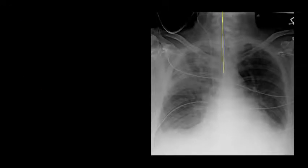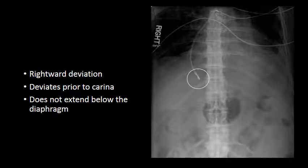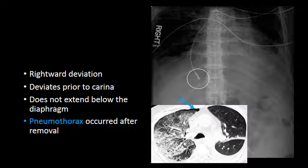Here's another example of a catheter which takes an abnormal course deviating to the right prior to the carina. On the abdominal film taken at the same time, we see this catheter does not pass below the diaphragm but instead goes into the right lower lobe, extending to the periphery. A deep catheter like this can sometimes result in a pneumothorax, and when pulling catheters that have reached the periphery of the lung, you should be ready for chest tube placement. The most severe complication is the development of a bronchopleural fistula should the catheter course through the bronchi out into the pleural space.